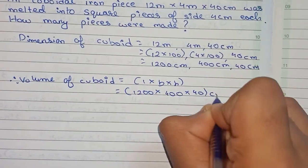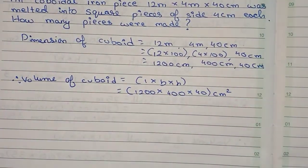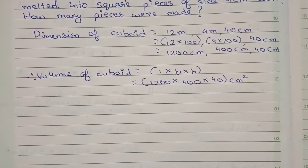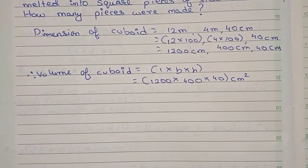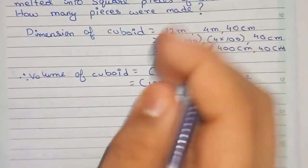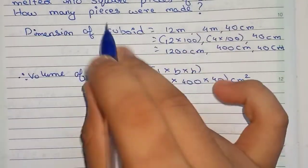So we keep it like this only. Now we find out the volume of the cube, I mean the square pieces.